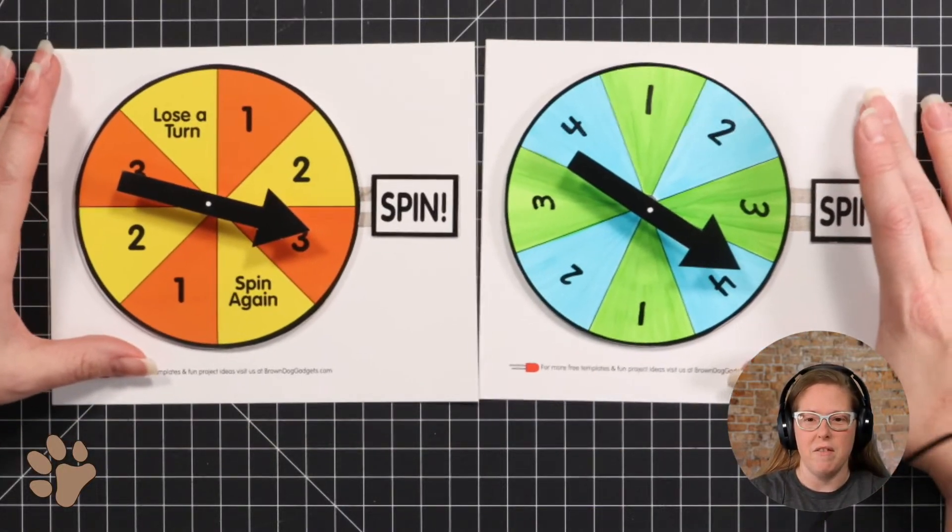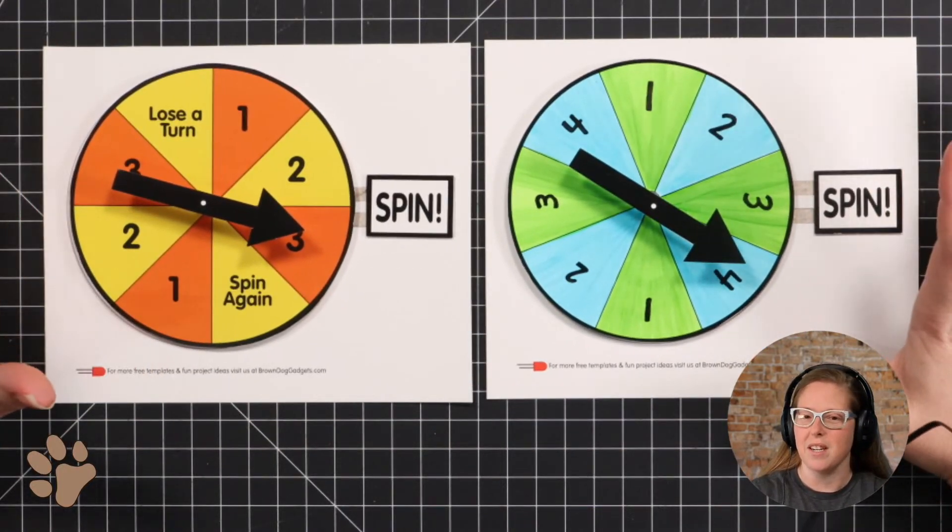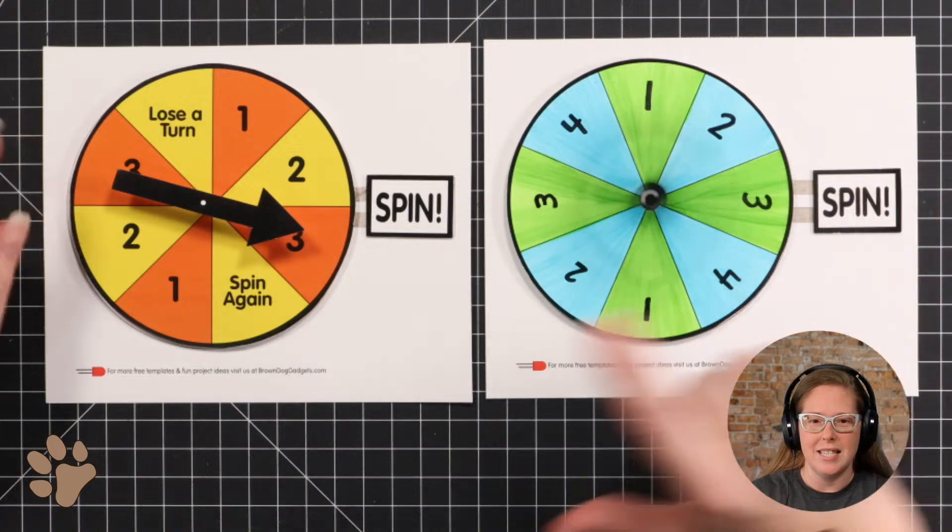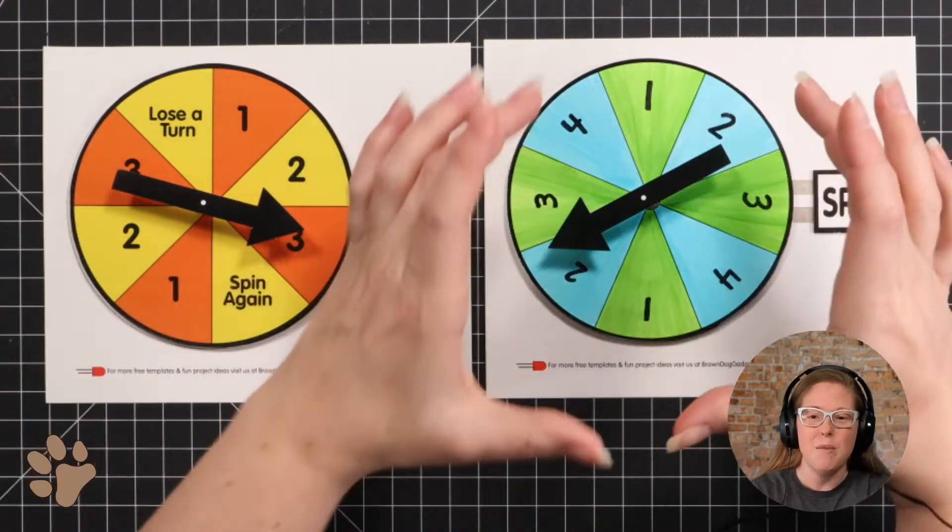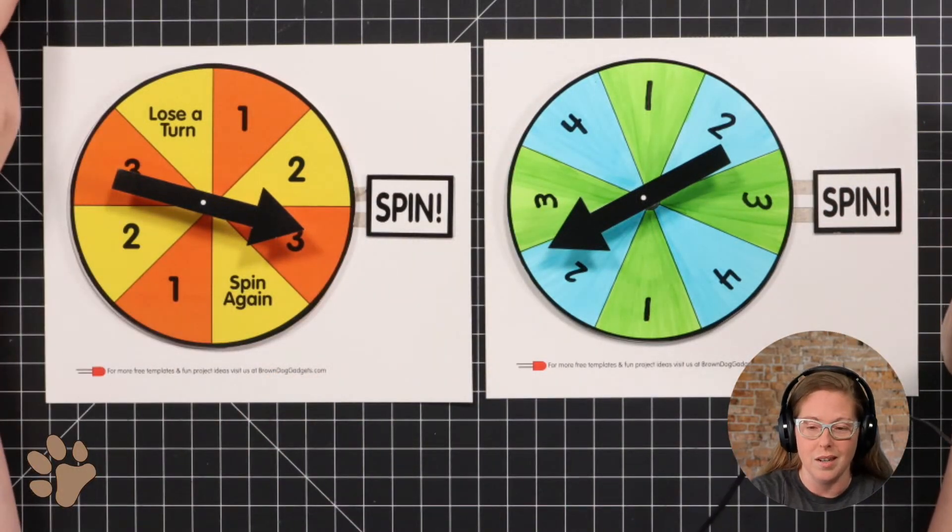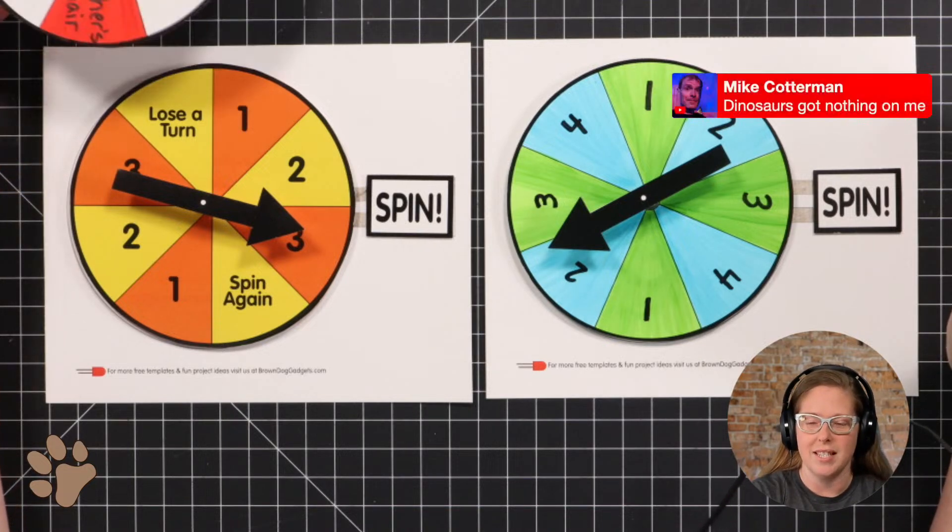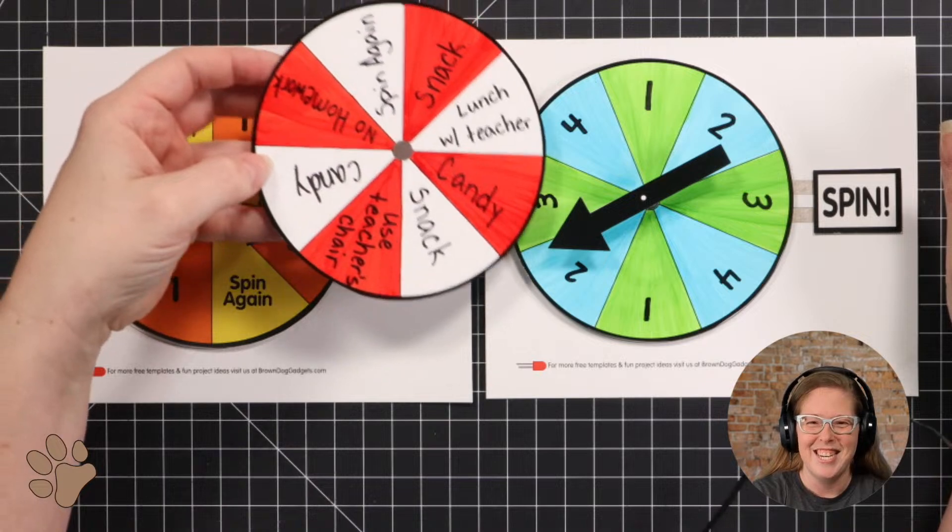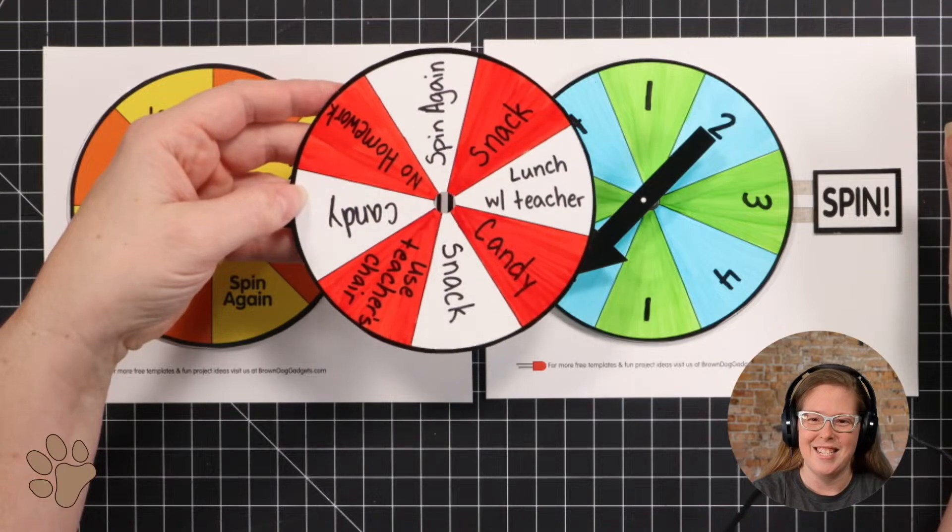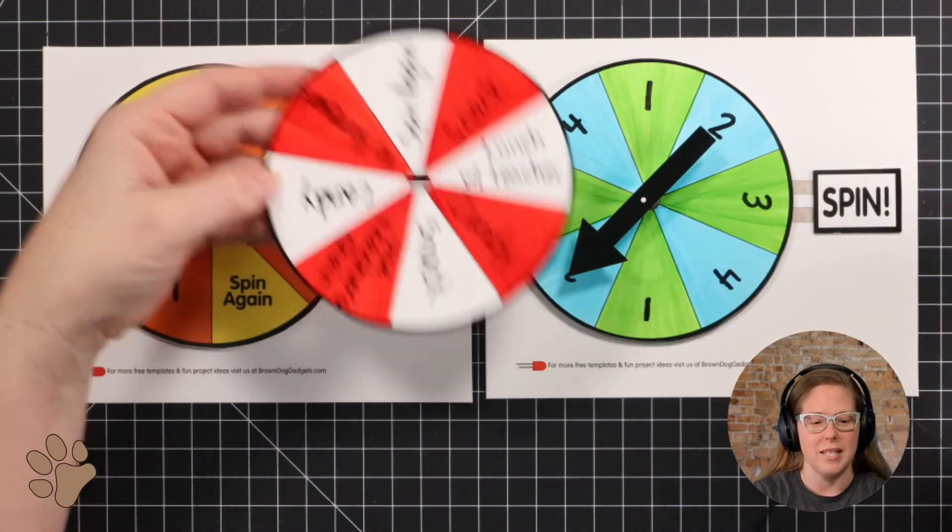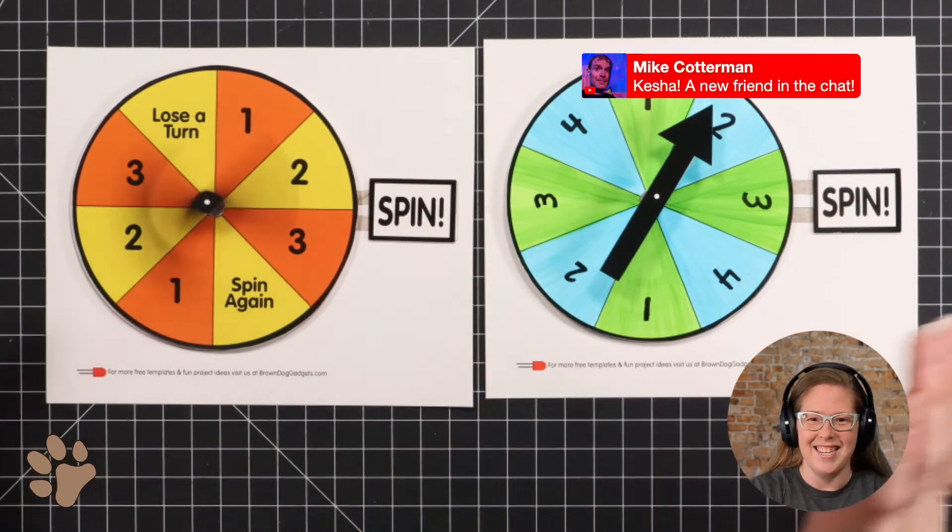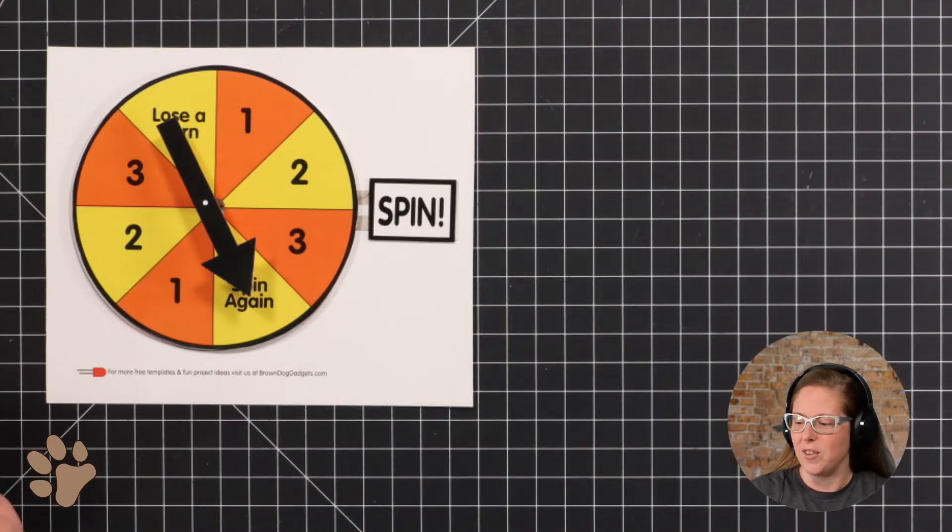I failed slightly. I kind of forgot the very first page of our template. There is this version on the template and a blank one that you can create whatever numbers you want for whatever game it is. Or, like Pete suggested yesterday, you could make a prize wheel. So we're actually going to use our game spinner to create a prize wheel today.